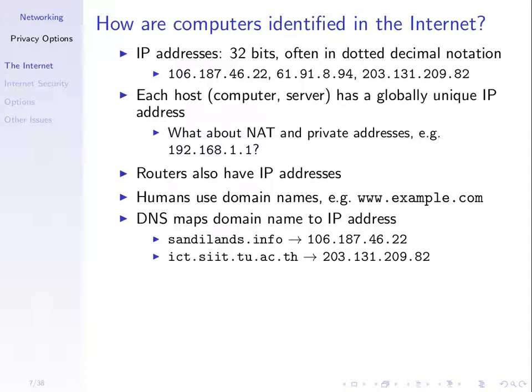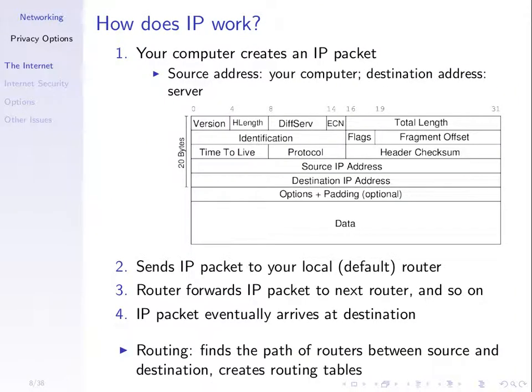We know about domain names — domain names map to IP addresses. If I know an IP address, I could find out the corresponding domain name. DNS generally maps from domain to IP, but given that database of mappings, I can do a reverse DNS: given an IP address, find the domain name. That's possible as well. We know how IP works — just a reminder of the structure of an IP packet.